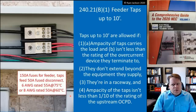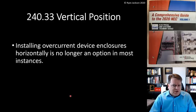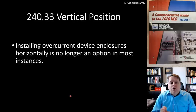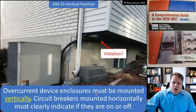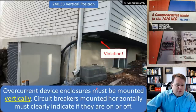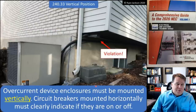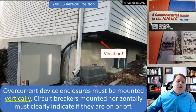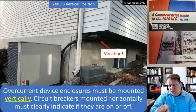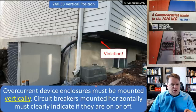Section 240.33 is definitely a technical change: it addresses vertical position. Installing overcurrent device enclosures horizontally is no longer an option in most instances. Overcurrent device enclosures must be mounted vertically. Previous versions of the code said vertically unless impractical. Circuit breakers that are mounted horizontally must clearly indicate if they are on or off.